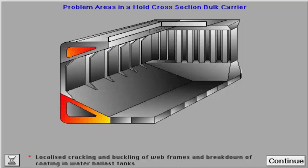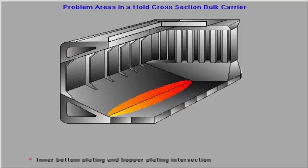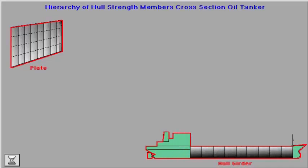Additional problem areas include hatch corners and hatch coaming brackets, localized cracking and buckling of web frames, breakdown of coating in water ballast tanks, and inner bottom plating and hopper plating intersection.